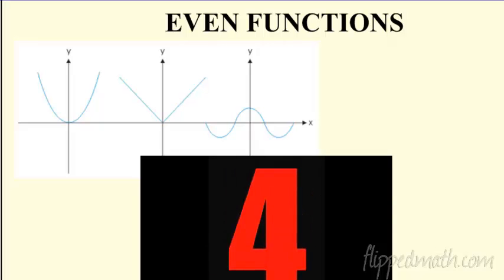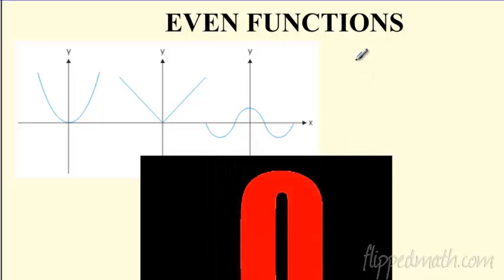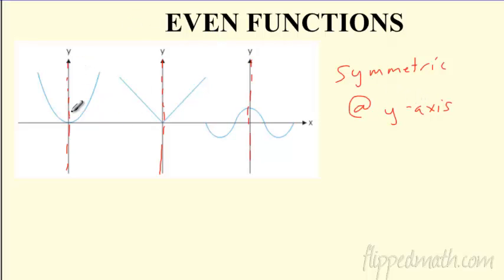Alright, so why are they even? Hopefully you came up with: they're symmetric. Check this out — if I draw a line right here, this is the axis of symmetry for all these. So even functions are symmetric about the Y-axis. If you fold it in half on the Y-axis, it's going to be a mirror image. That's an easy way to tell what an even function is. Graphically, you just draw the axis of symmetry.